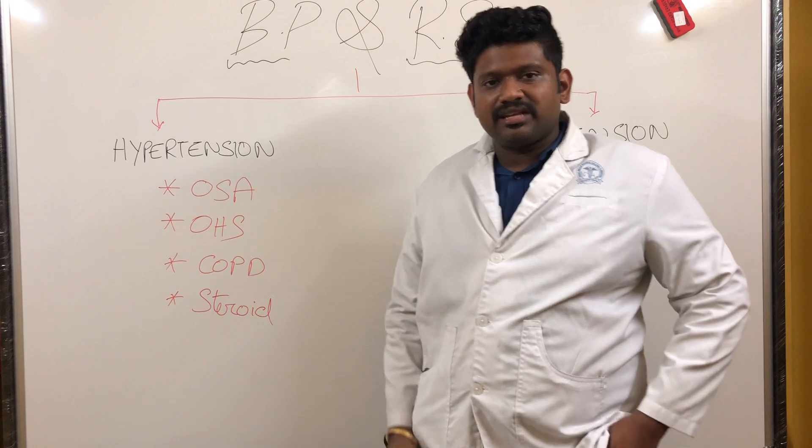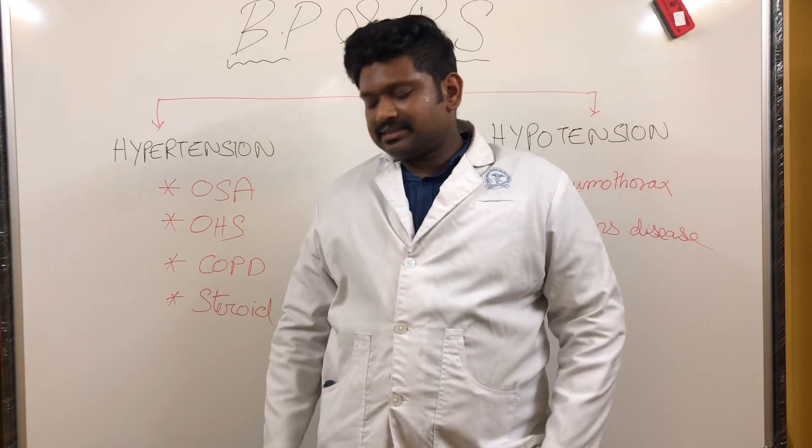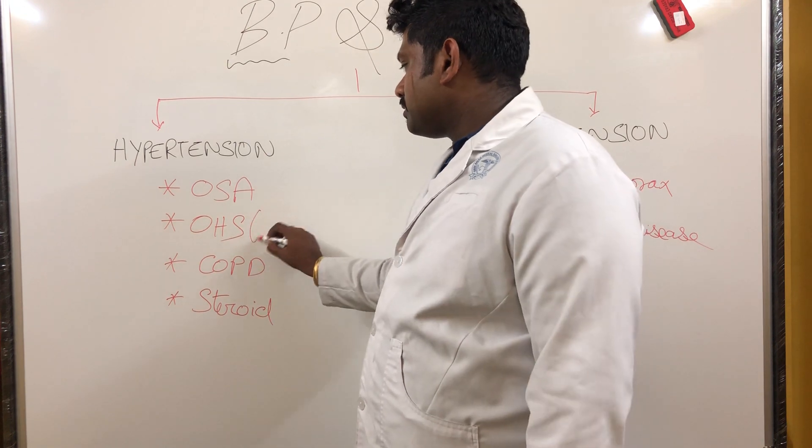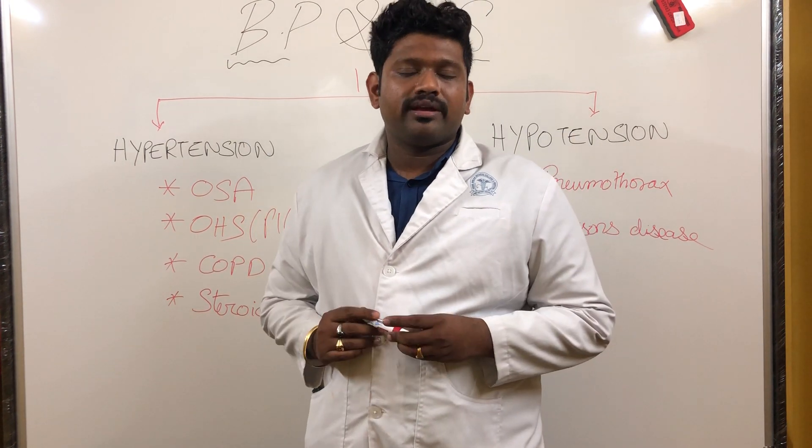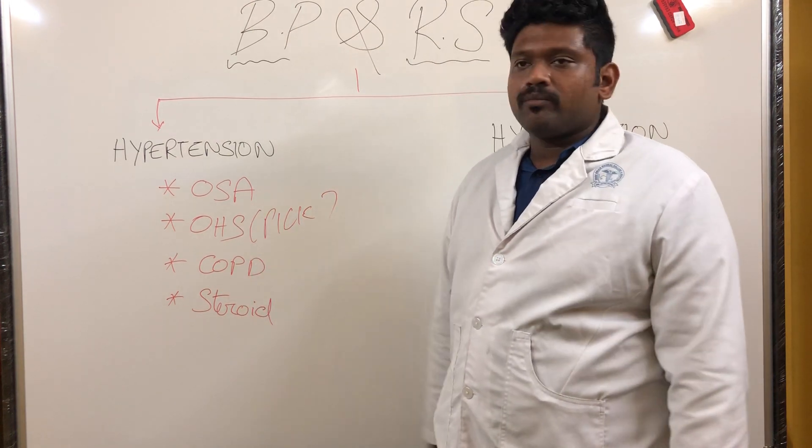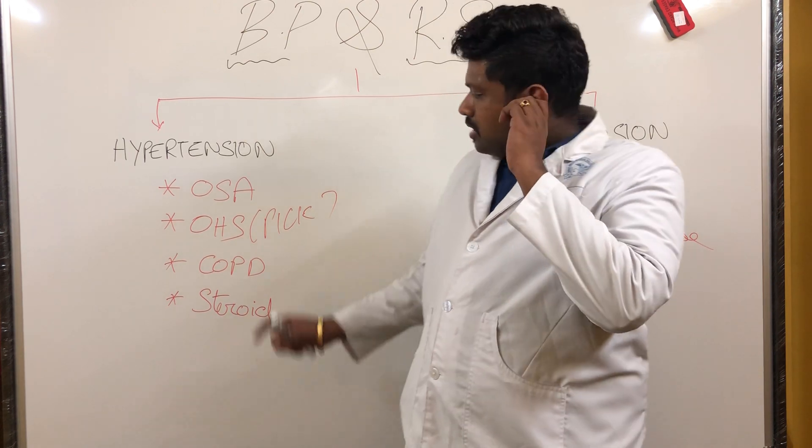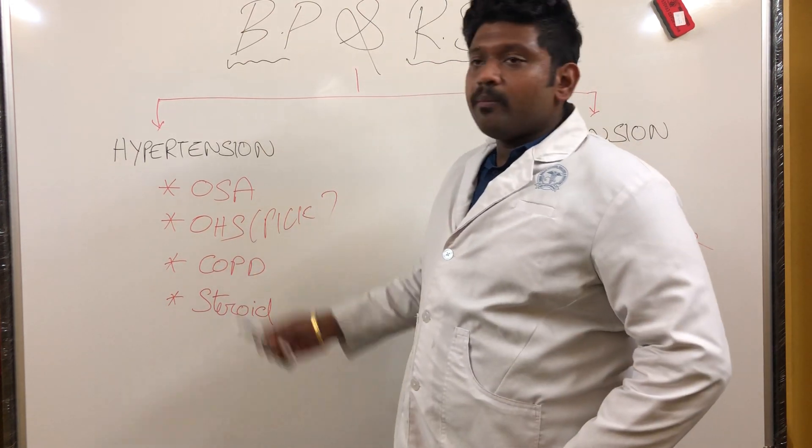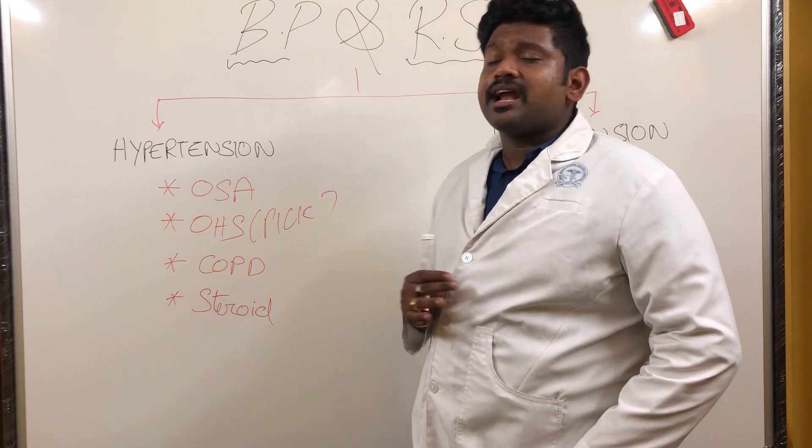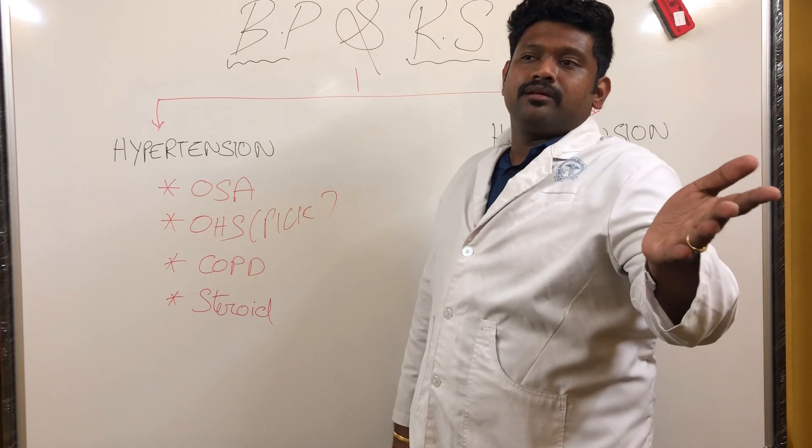Second: OHS, obesity hyperventilation syndrome, also called Pickwickian syndrome. This is an MCQ - Pickwickian syndrome from Charles Dickens' cartoon character Adam who was a snorer. OHS, obesity hyperventilation syndrome, is also associated with hypertension, both systemic and pulmonary. They'll have pulmonary hypertension and systemic hypertension.